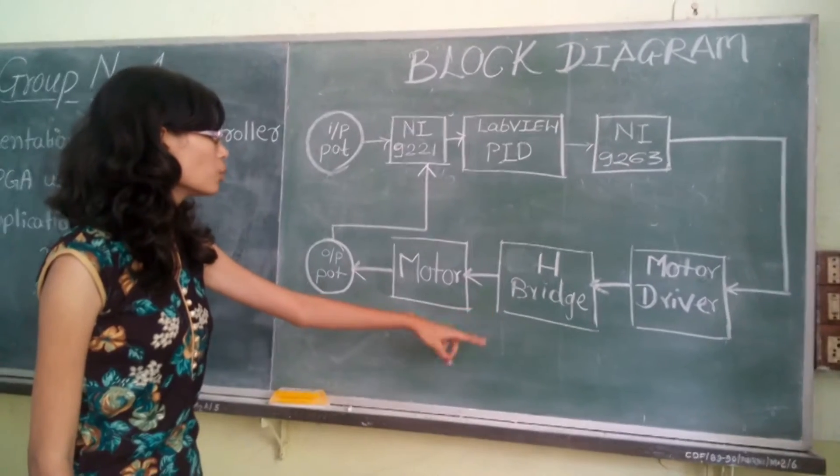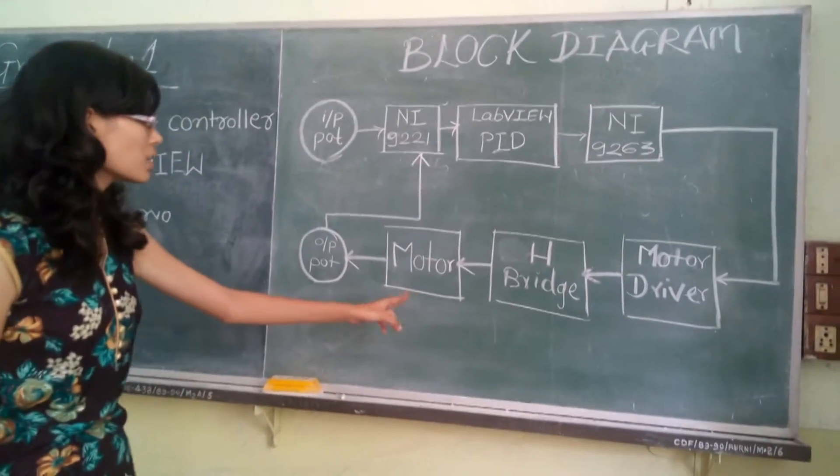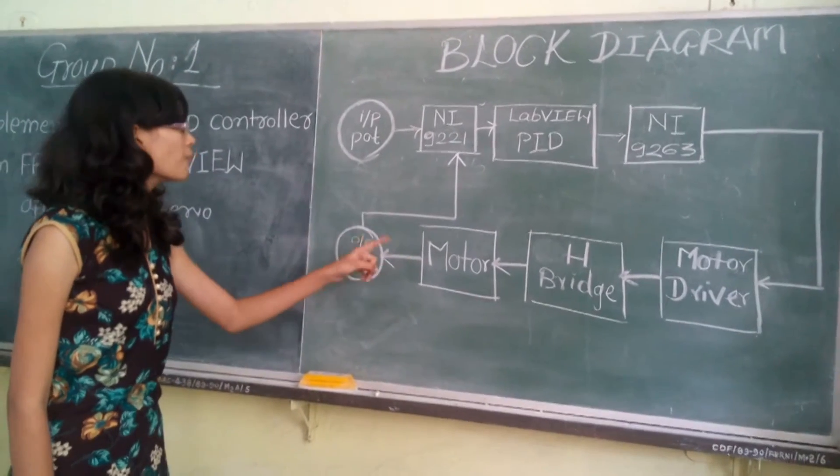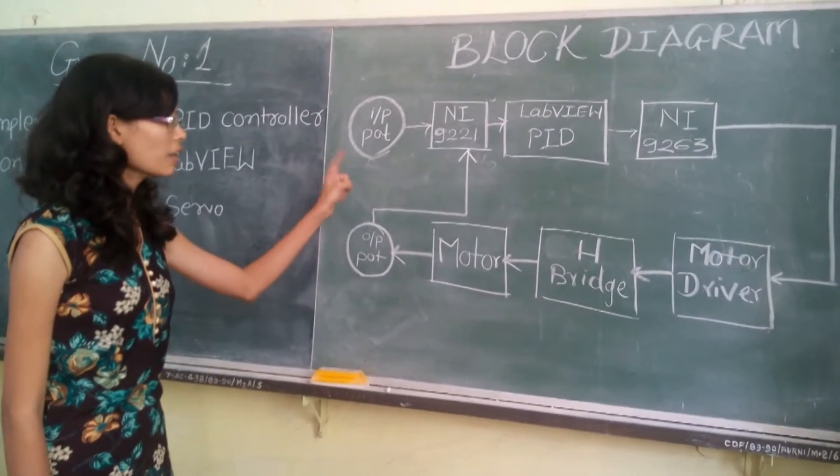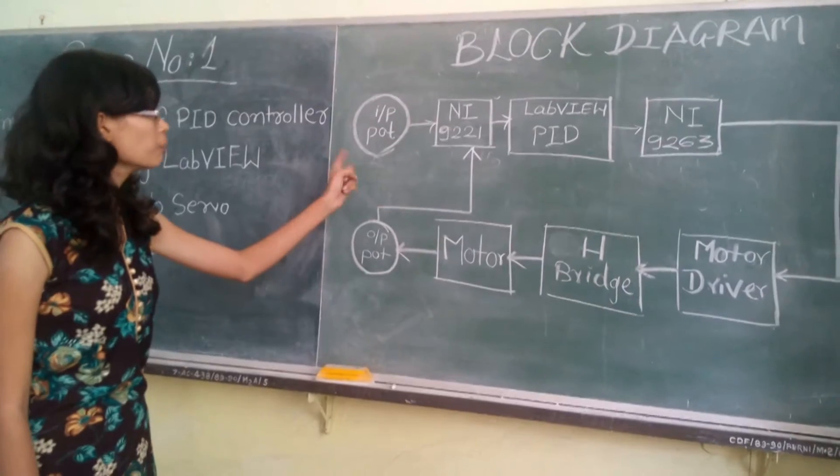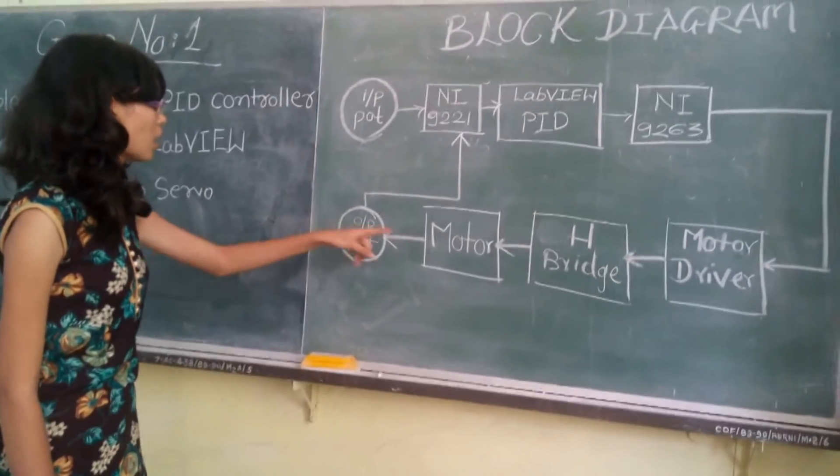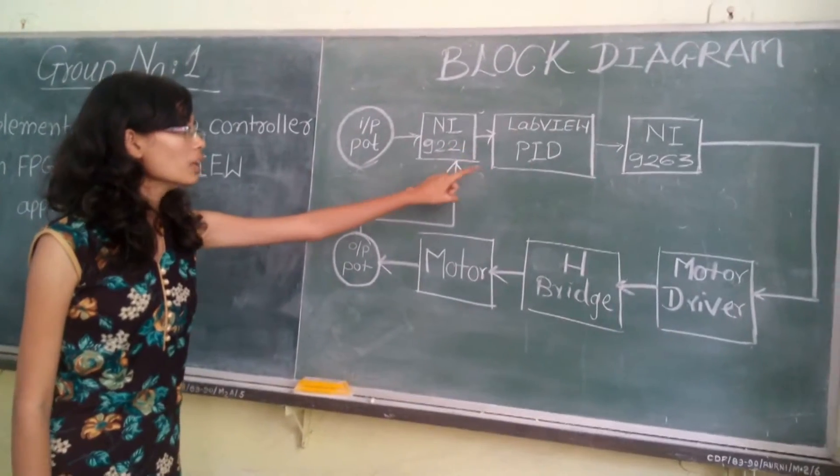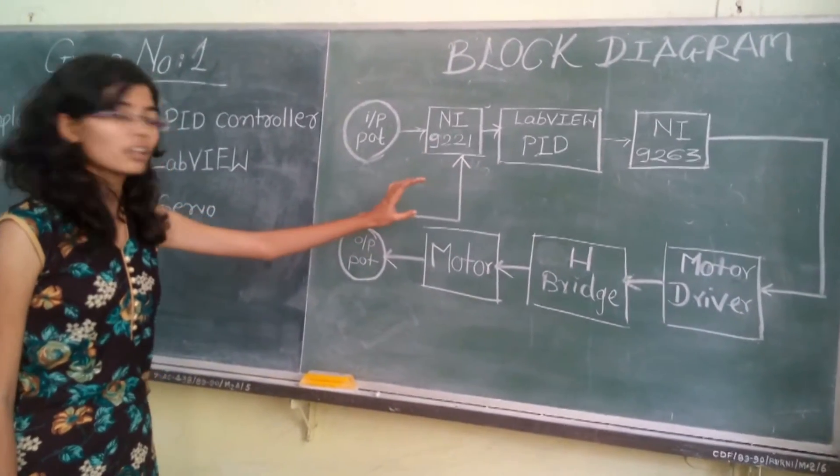Then H-bridge output is given to motor which rotates the motor according to the input given to it. After it gets the equal angle given to the input, then the output is sensed by the output port and it is again given to the input module to the LabVIEW and PI.